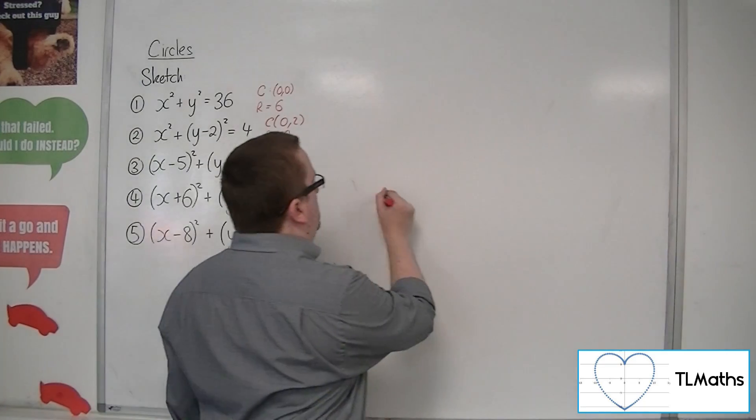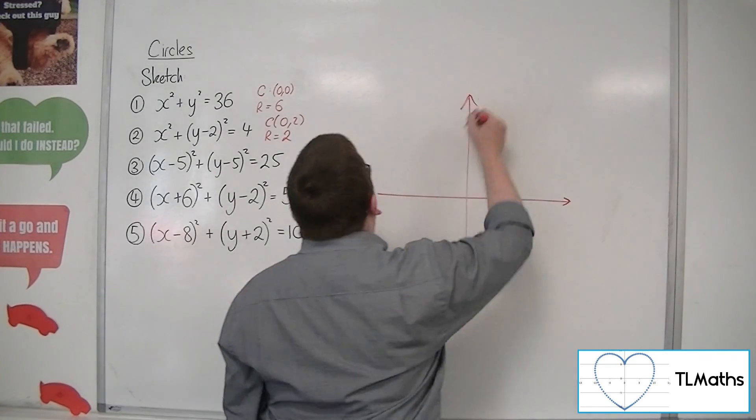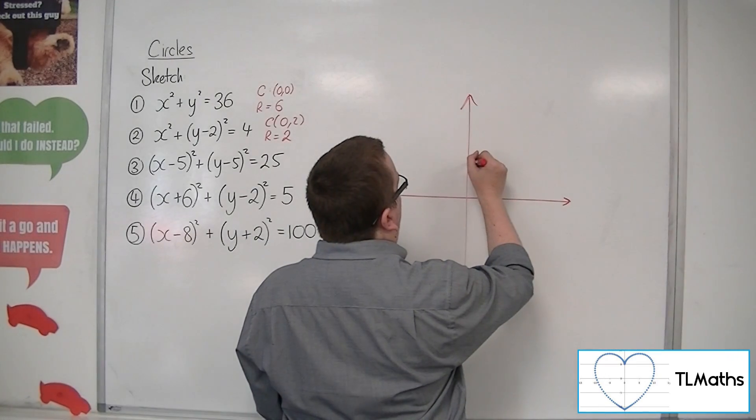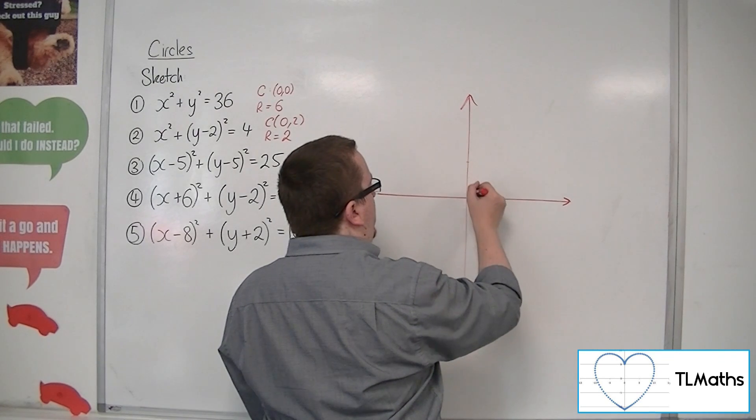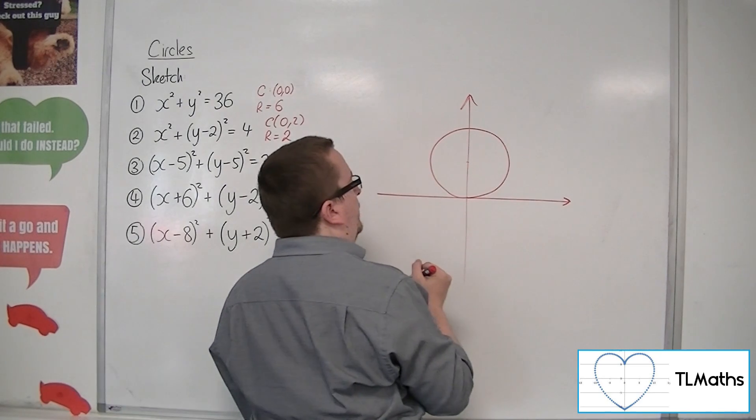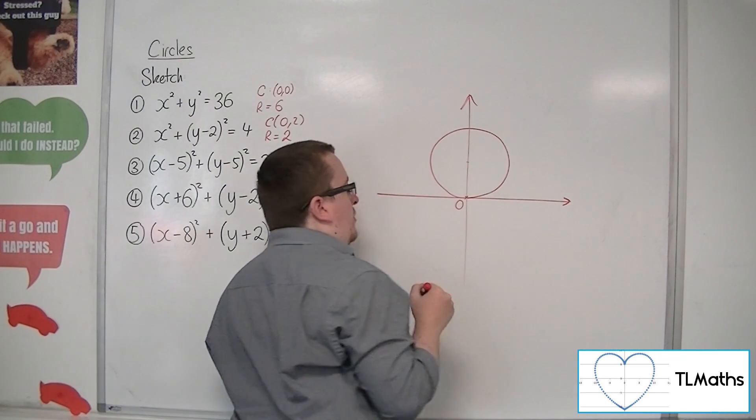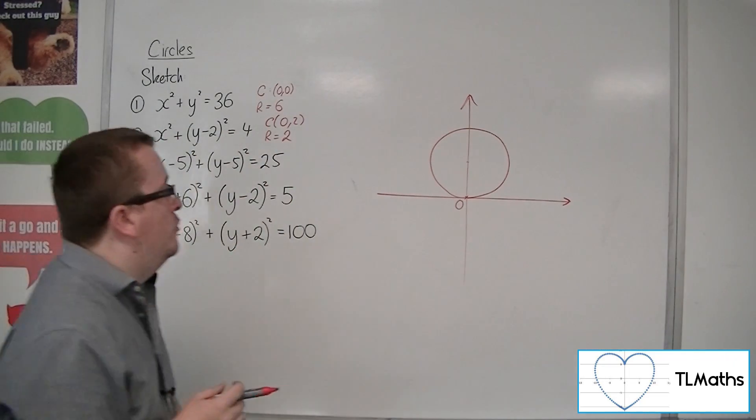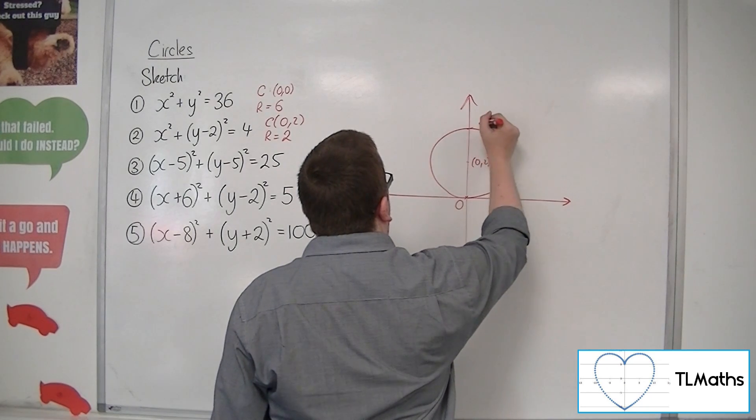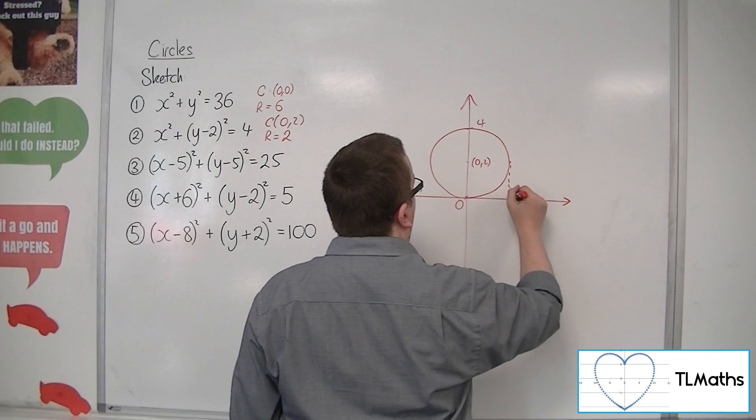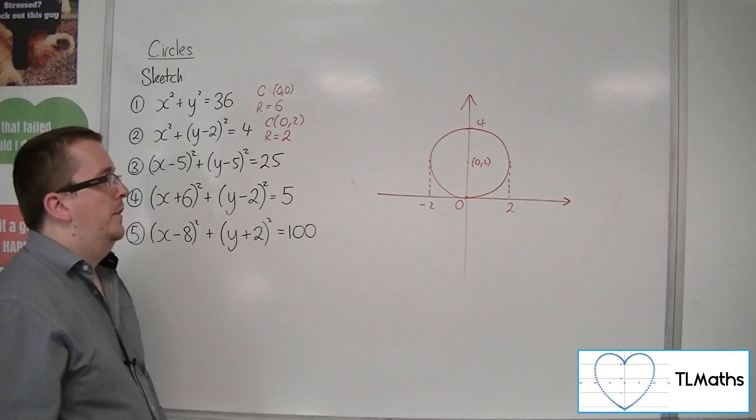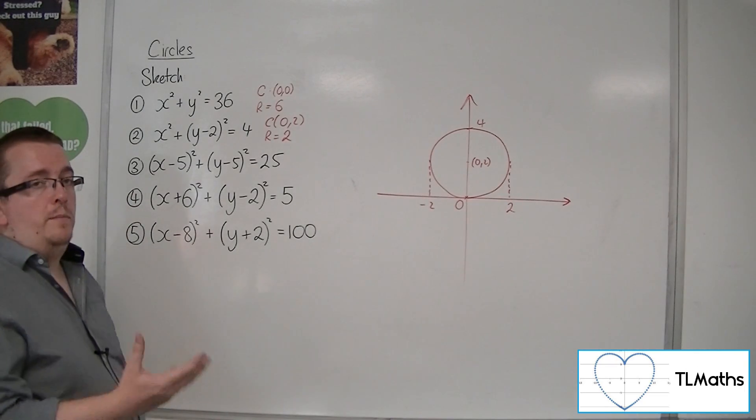So this is a circle centred at 0, 2, with radius 2. So if its centre is at 0, 2, then its radius must hit the origin. So it must look something like this, where it's just got that one point where it's hitting the x-axis at the origin. Let's make this clear that this is 0, 2, and that will be at 4. That's 4, that's 2, that's minus 2. And so that is a sketch of number 2.